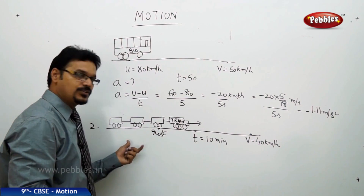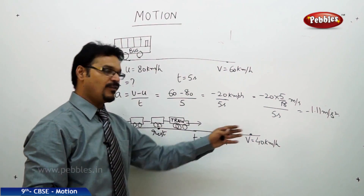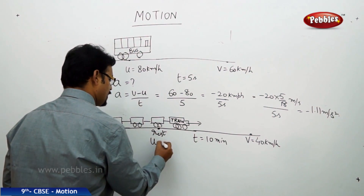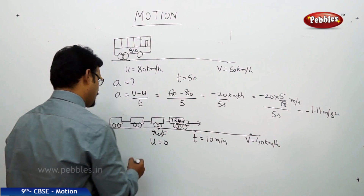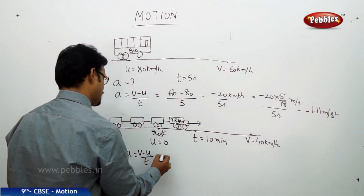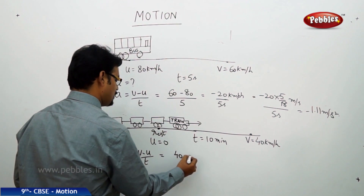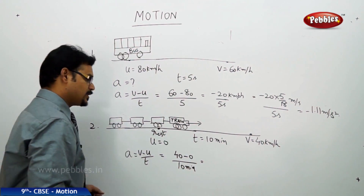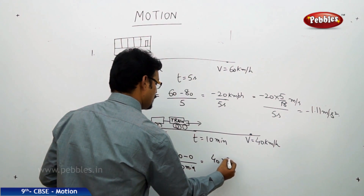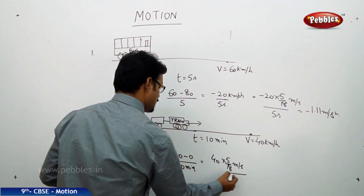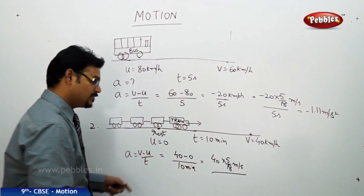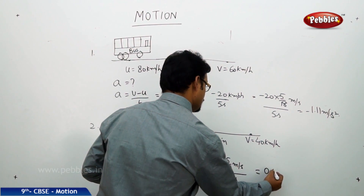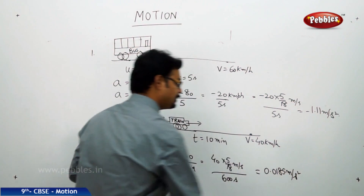See the second problem. There is a train that starts at rest and reaches a speed of 40 kmph in 10 minutes. What is its acceleration? At rest means initial velocity is 0. a = (v - u) / t. Final velocity is 40 kmph, initial velocity is 0, time taken is 10 minutes. Convert everything into meters per second: 40 kmph multiplied by 5/18, and 10 minutes equals 600 seconds. Simplifying, you get 0.0185 meters per second square.